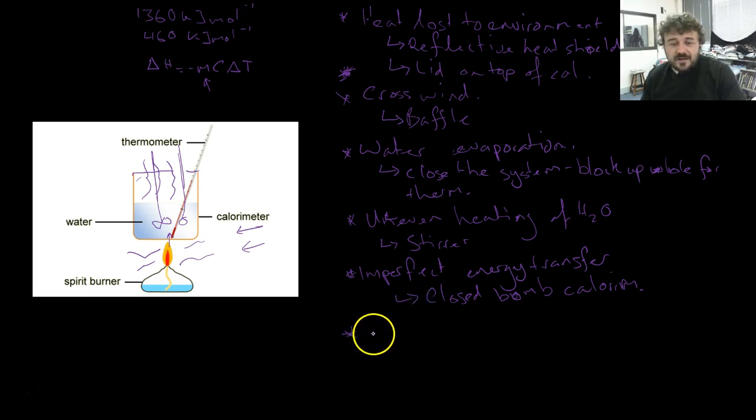There's another one and that is the inaccuracy of our thermometer. How do we combat that? We use a digital one. A digital thermometer will be more accurate, there'll be less parallax error when you're reading it. A digital thermometer will solve this problem.